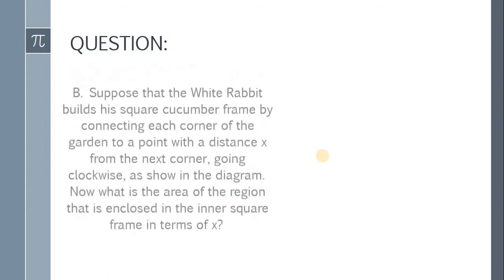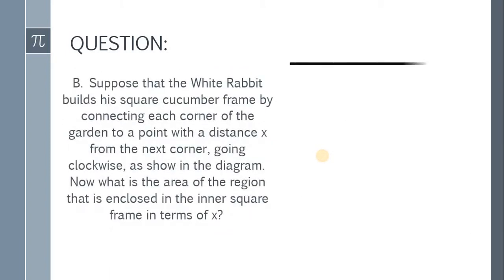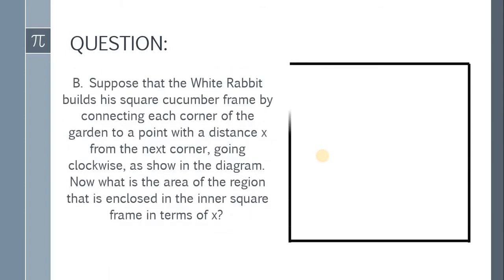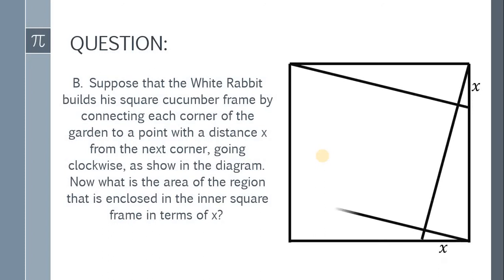Here's the second part. Suppose that the white rabbit builds a square cucumber frame by connecting each corner of the garden to a point with a distance x from the next corner, going clockwise as shown in the diagram. Now the question is, what is the area of the region that is enclosed in the inner square in terms of x?